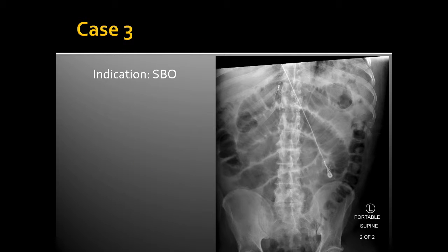Case 3 is an abdominal x-ray performed with an indication of small bowel obstruction. The interpreting radiologist correctly identifies dilated loops of small bowel and calls it concerning for small bowel obstruction. However, the patient is 3 days post-op from surgery to address bowel obstruction. The radiologist did not know this and therefore incorrectly interpreted the finding as obstruction, when it is most likely adynamic ileus.